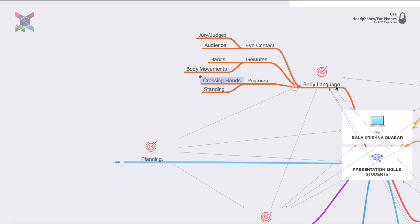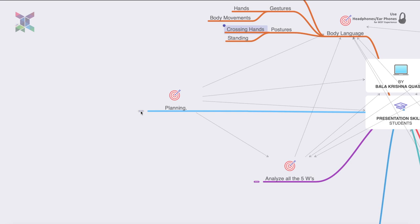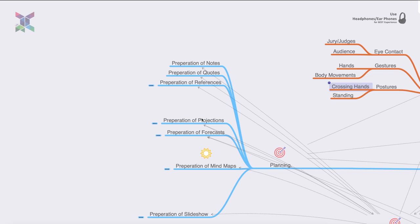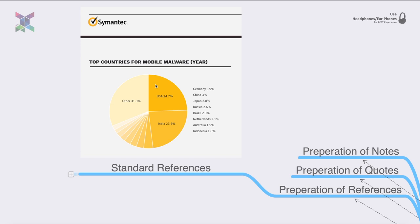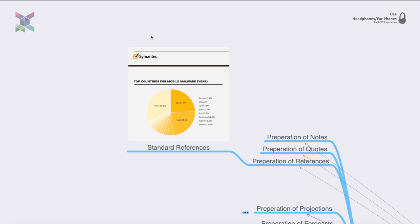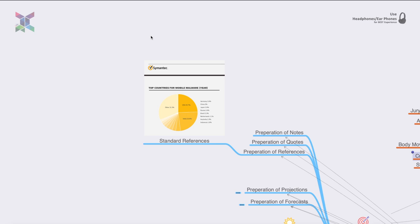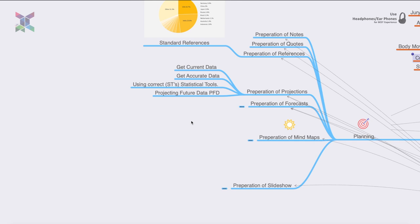Planning is to be done first. It includes preparation of notes, preparation of quotations collected from various sources, and preparation of references — always note where you collected each reference from. Preparation of projections involves getting current accurate statistical data, using the correct statistical tool, and projecting future data for pictorial or textual presentation.